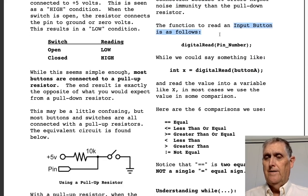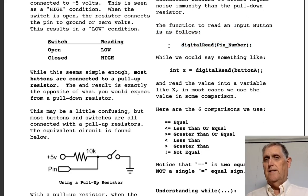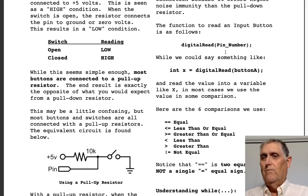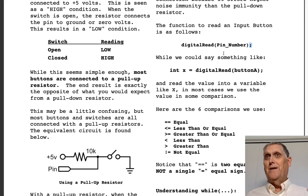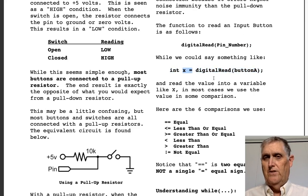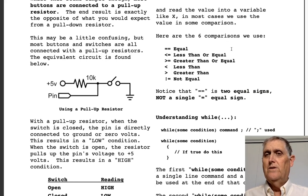To read an input button, all you have to do is 'digitalRead(pin_number)'. You can type that as a line of code and it'll work. Usually we try to do something with it — for example, create a variable called x and store the result of digitalRead into x. Once you have a value, you can do comparisons. There are six comparisons possible.